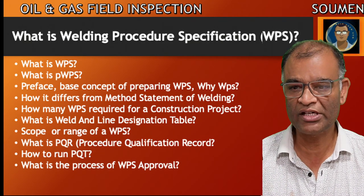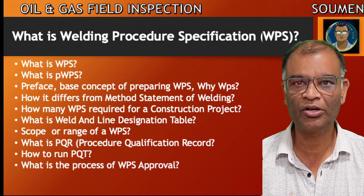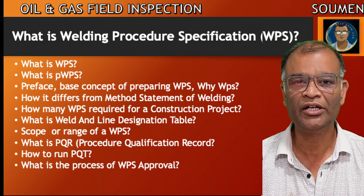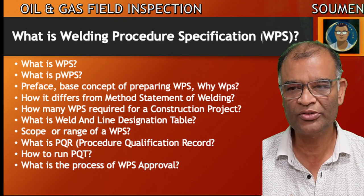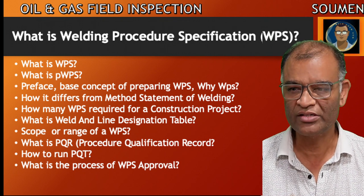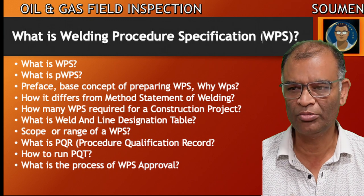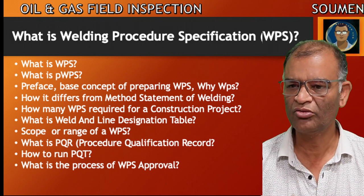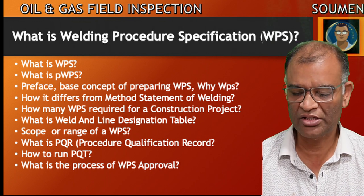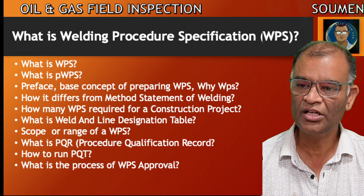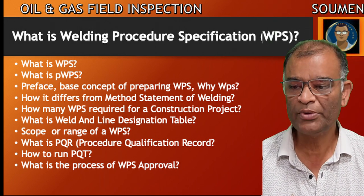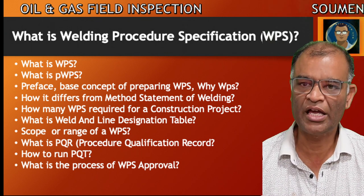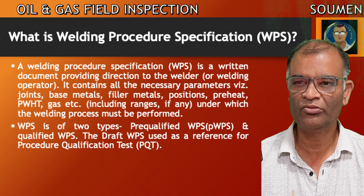We will be discussing the following questions which come to mind when talking about welding procedure specification — in short, always called WPS. For a layman, the first questions are: What is WPS? Sometimes we say PWPS — what is PWPS then? The base concept of preparing WPS. Why do we need WPS — can't we just weld? How does it differ from the method statement of welding? Why is the method statement of welding not enough? How many WPS are required for a construction project? What is the weld and line designation table? What is the scope or range of a WPS? What is PQR — procedure qualification record? How to run the PQR? And finally, what is the process of WPS approval from the company? Let us go one by one through these subjects.